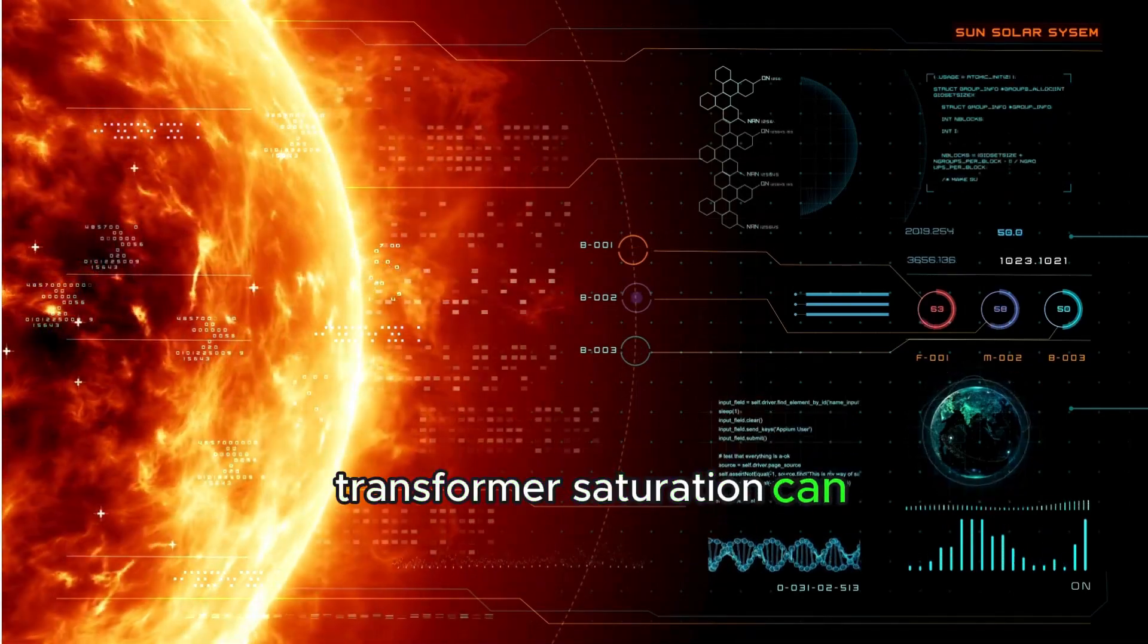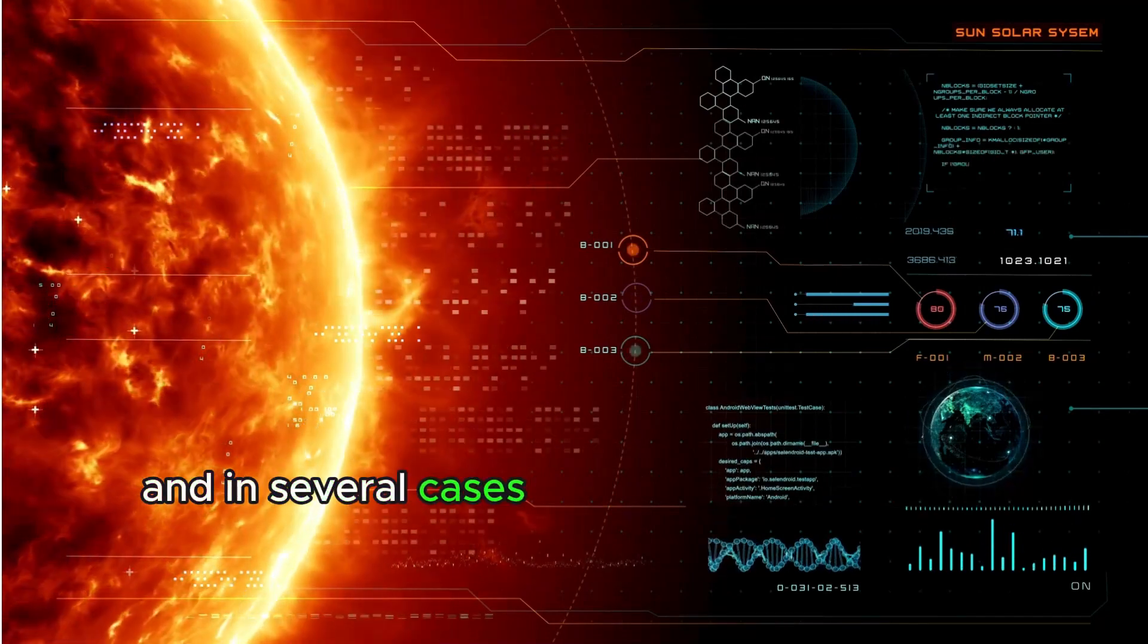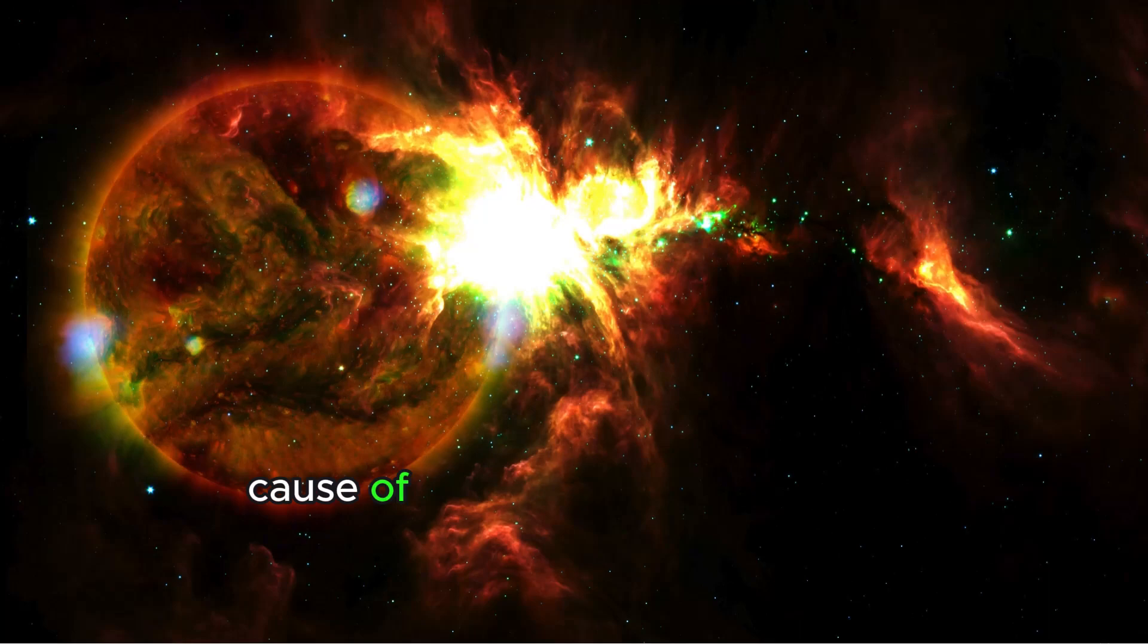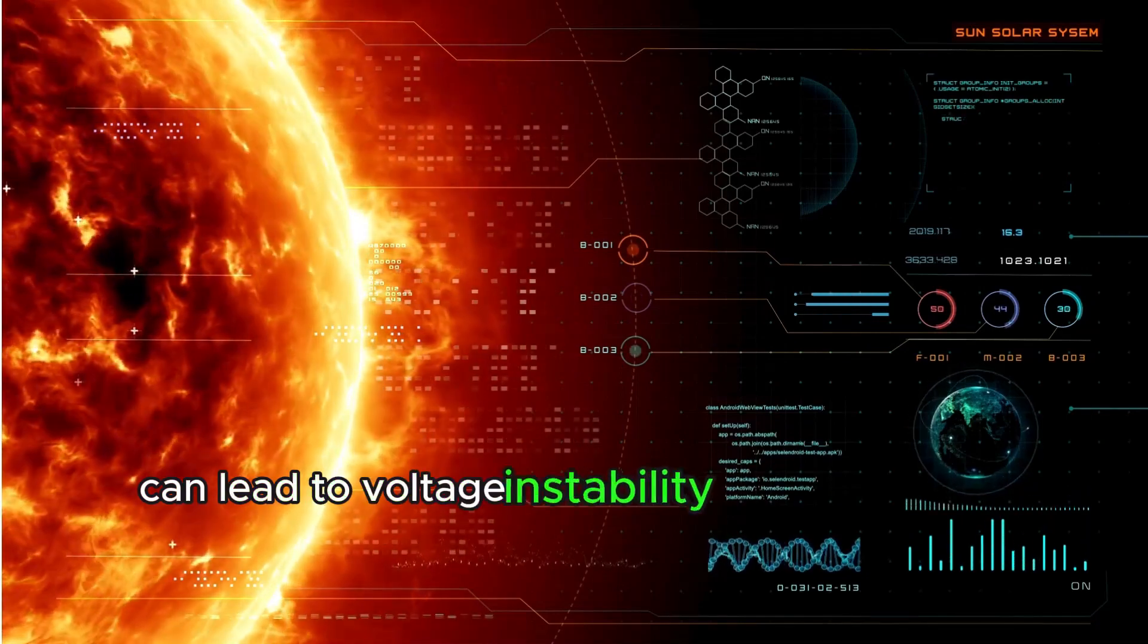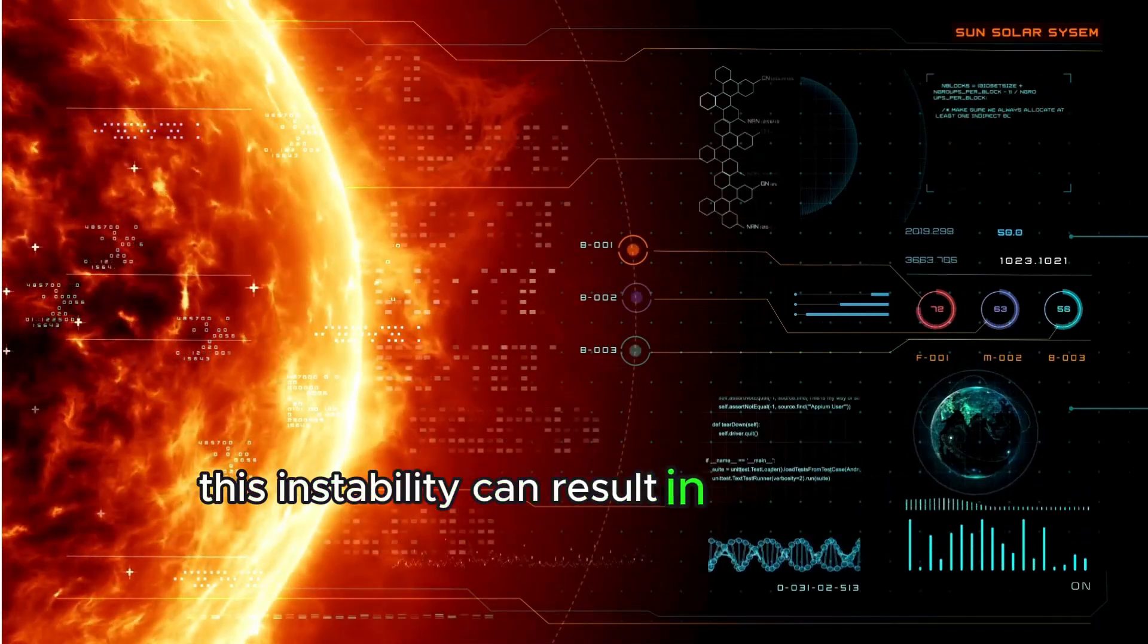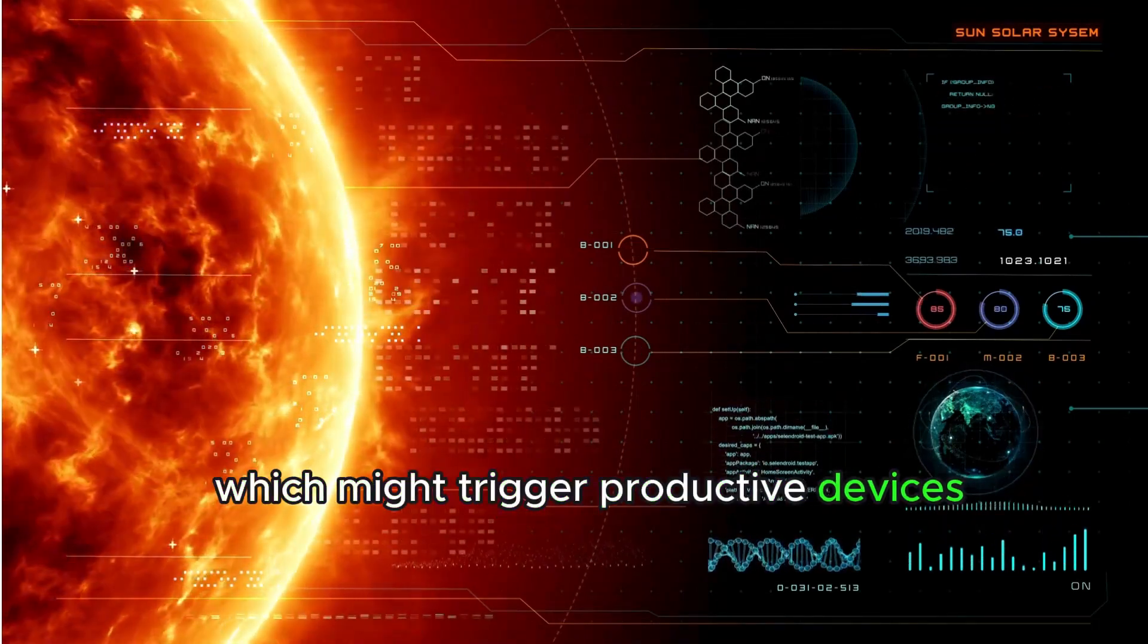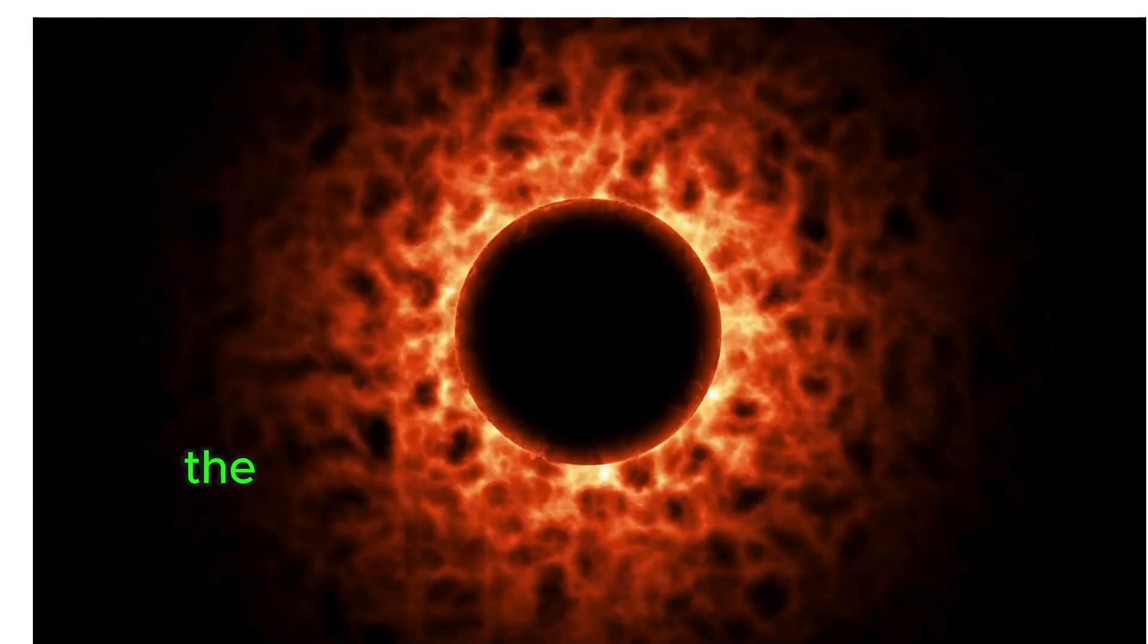Transformer saturation can reduce the efficiency of the power grid and in severe cases lead to transformer failure. The second phenomenon because of GICs is voltage instability. The presence of GICs can lead to voltage instability in the power grid. This instability can result in voltage drops which might trigger protective devices and lead to blackouts.